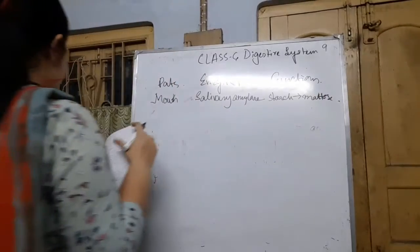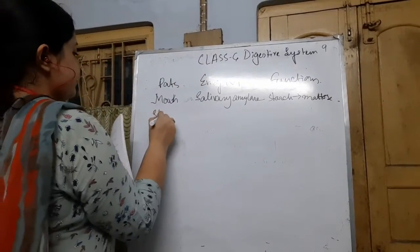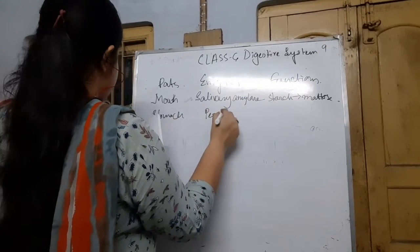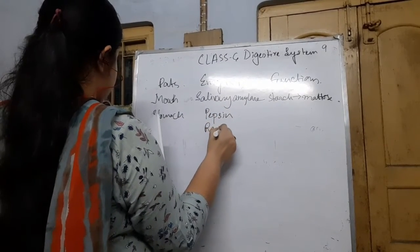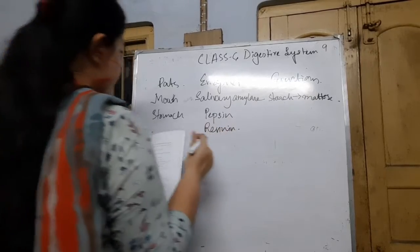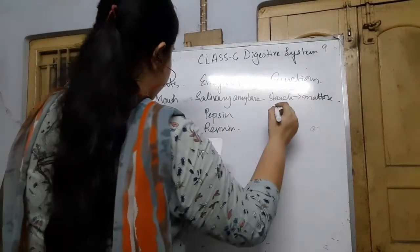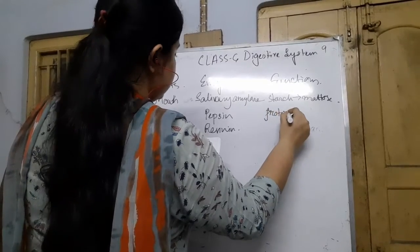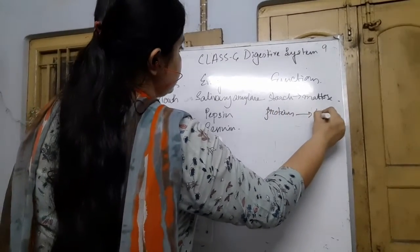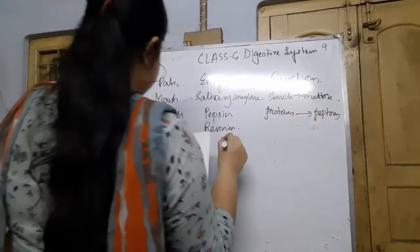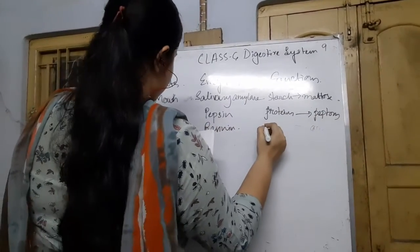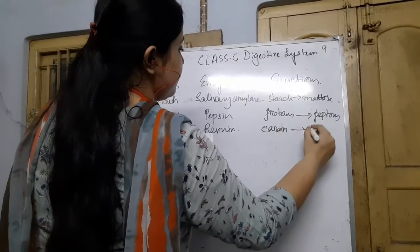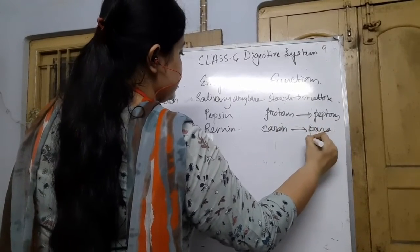Next, the stomach. Here, pepsin and rennin are present. The function of pepsin is to convert proteins into peptones. The function of rennin is to convert casein into paracasein.